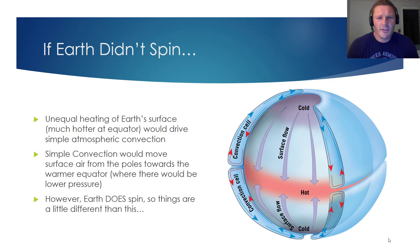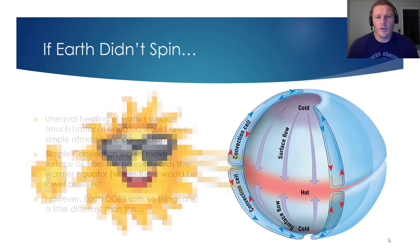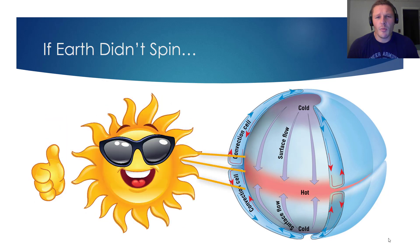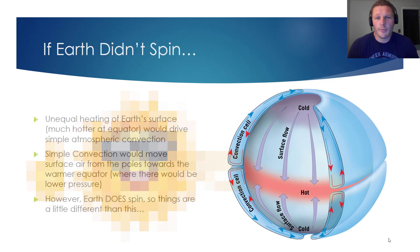Let's start off by considering how global air circulation would occur if Earth didn't spin. A non-spinning Earth would actually have a really simple airflow mechanism. Solar energy will be far more concentrated at the equator than at the poles, so we should expect air at the equator to get quite hot, whereas air near the poles will be quite cold.